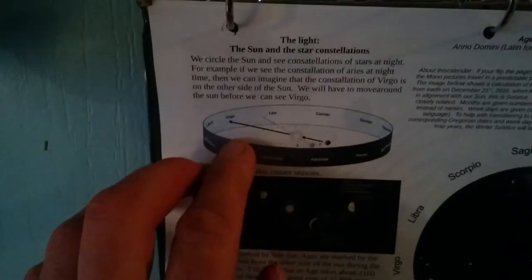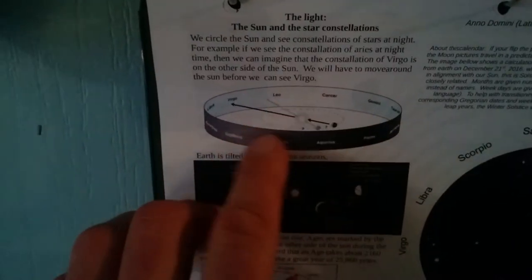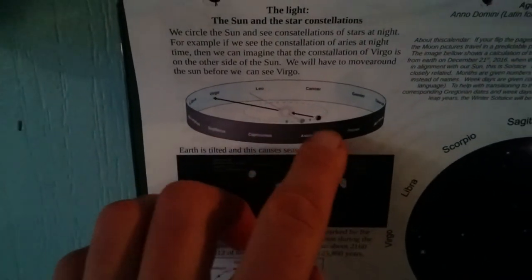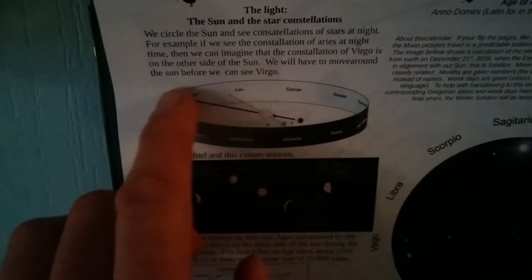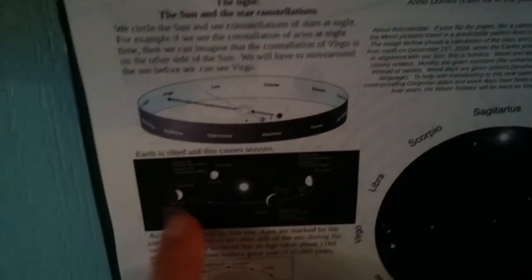It talks about how the Earth goes around the Sun and we can see different constellations at different times of the year depending on where we are in our travel around the Sun.